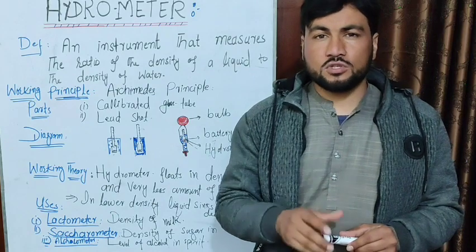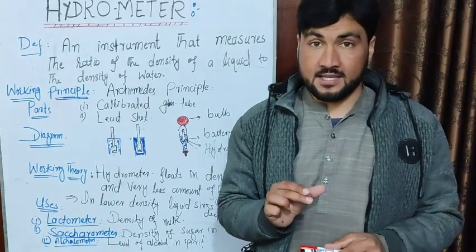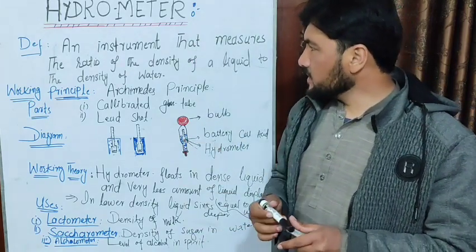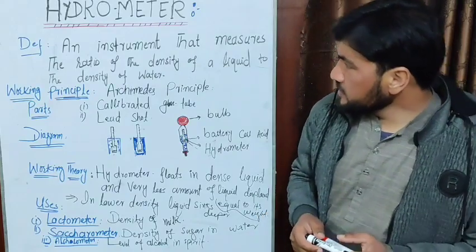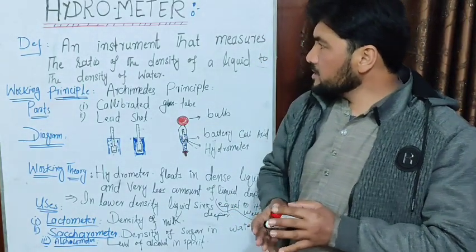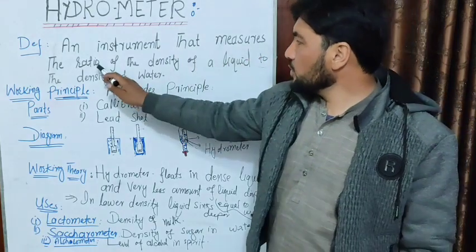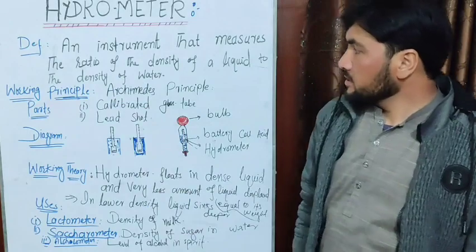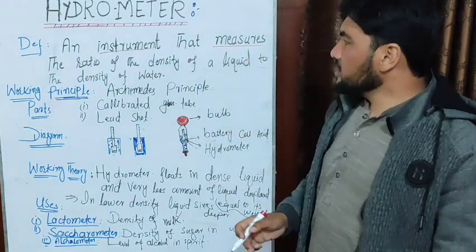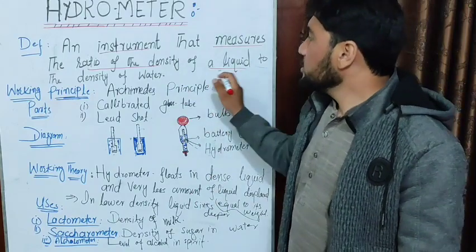The next question is to write a note on a hydrometer. An instrument that measures the ratio of the density of a liquid to the density of water. This is a machine which measures the ratio of the density of a liquid to the density of water.